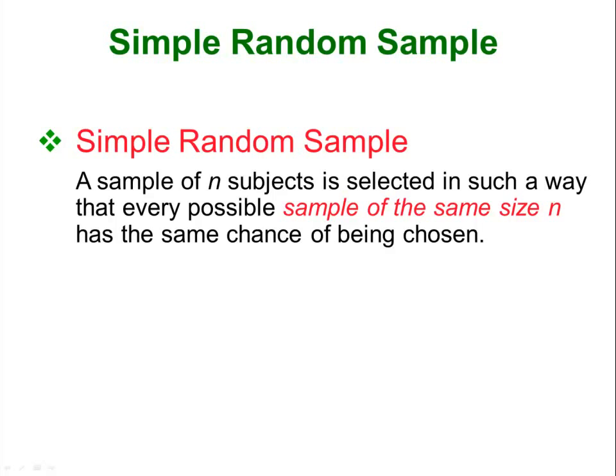Simple random sample is different. It has to be random so each person still has that 1-in-10 chance of being chosen. But each sample of size 100, for example, also has to have that same chance of being chosen. In the previous example that is not true, because if you think of one possible sample being the first 100 people, the probability of the first 100 people being chosen is impossible — since you are choosing every 10th person, you can't choose any two things that are next to each other.